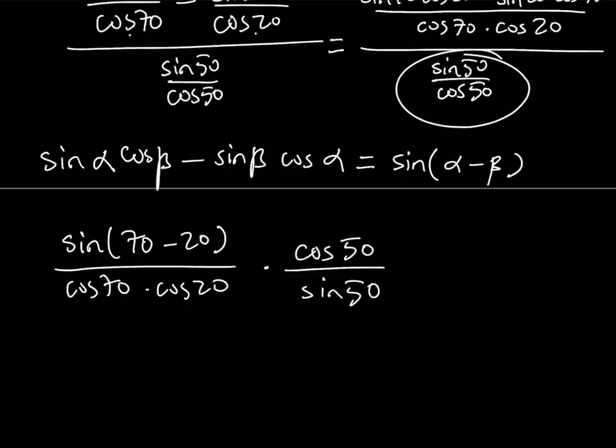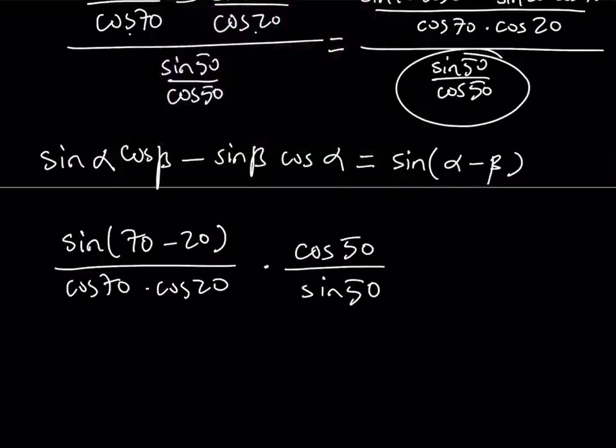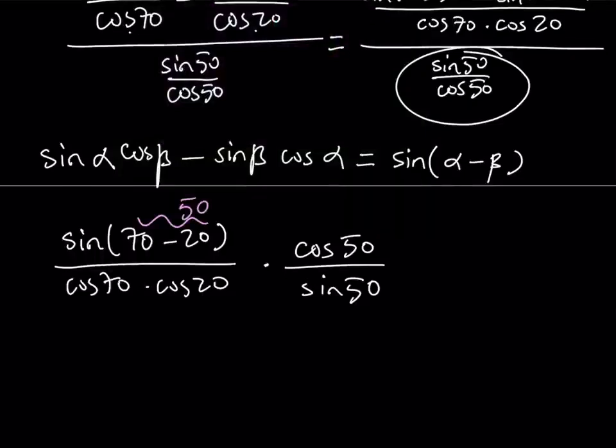Okay, now I have sine of 70 minus 20, which is equal to 50. And this immediately simplifies. You can just cross them out, which is nice. And we end up with a simpler expression. But we're going to make it even better. So at this point, you might be thinking, what am I going to do with cosine 50, cosine 20?